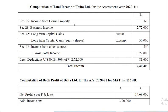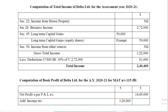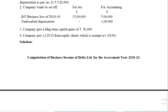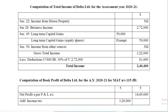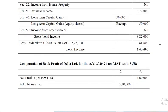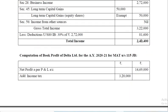Now, computation of total income: income from house property is nil. Business income as computed — 2,72,000 after set-off. Long-term capital gain — not to be taken in book profit but yes for total income — 50,000. Long-term capital gains on equity shares is exempt under Section 10(38). So long-term capital gain total is 50,000. Income from other sources is nil. Gross total income is 3,32,000. Deduction under Section 80IB: 30% of business income after set-off — 30% of 2,72,000 equals 81,600. So net total income is approximately 2,40,000 (after rounding).